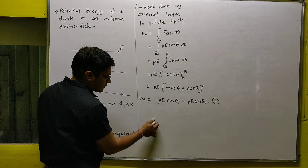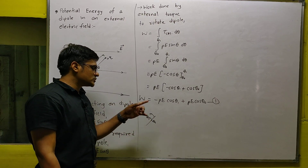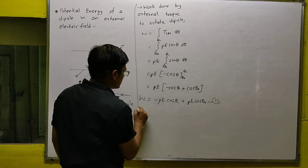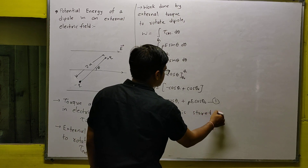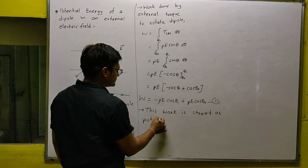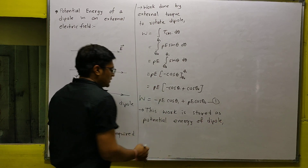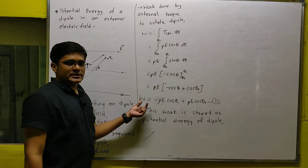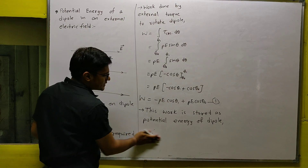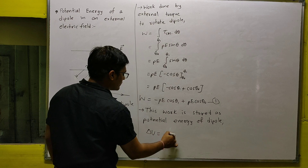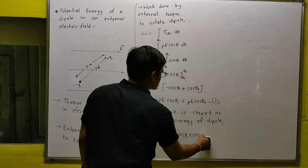The dipole starts at angle θ₀ and you rotate it to angle θ₁, doing some work in the process. That work gets stored in the form of potential energy of the dipole. The dipole already has some potential energy and you are adding to it, so this work done equals the change in potential energy. Therefore, ΔU = PE(−cosθ₁ + cosθ₀).